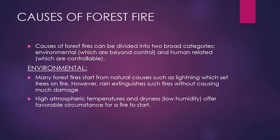Looking at the environmental factors: many forest fires start from natural causes such as lightning during thunderstorms, which can set trees on fire. However, the rain accompanying the lightning often extinguishes such fires without causing much damage. Another reason is high atmospheric temperatures and dryness during summer months, which offer favorable circumstances for a fire to start.